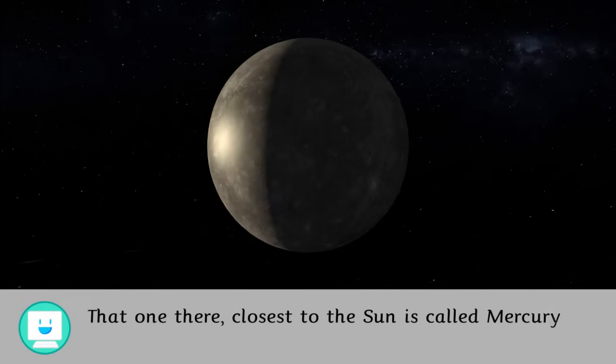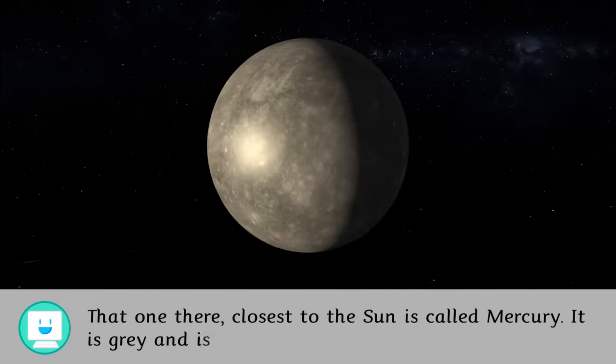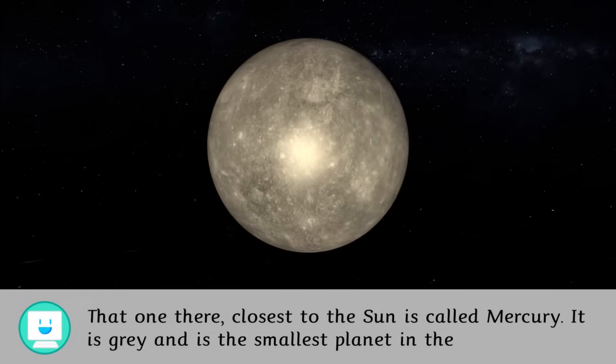That one there, closest to the Sun, is called Mercury. It is grey and it's the smallest planet in the solar system.